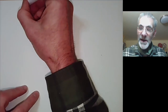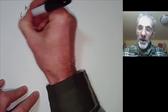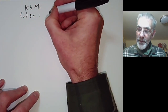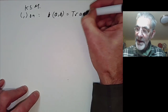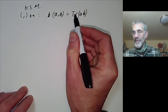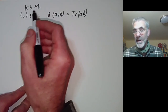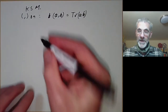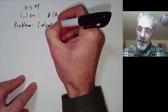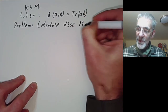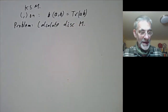If we have a field extension, then we have a bilinear form on M defined by (a,b) = trace(ab). We defined the trace of an element of M in the previous lecture to be its trace as a linear transformation on M. So we now have the following problem: calculate the discriminant of M — or more precisely, the discriminant of the extension M over k.